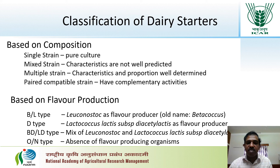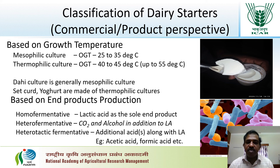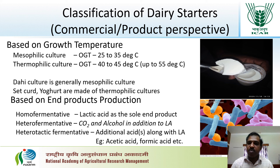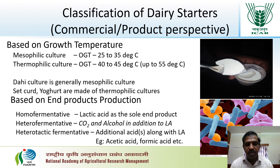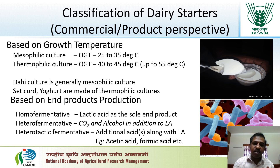Today we will focus on the commercial or product perspective classification of dairy starters. There are two aspects: based on growth temperature, mesophilic cultures and thermophilic cultures. Mesophilic cultures have an optimum growth temperature of around 25 to 35 degrees Celsius, which is room temperature.